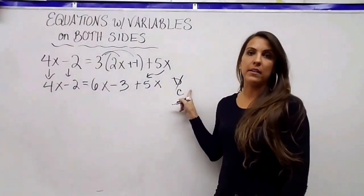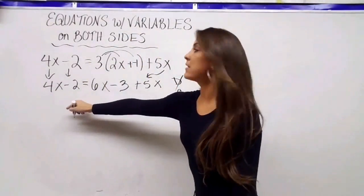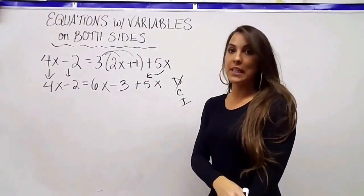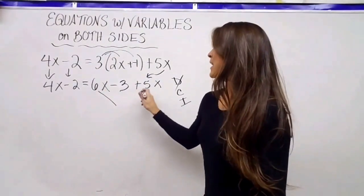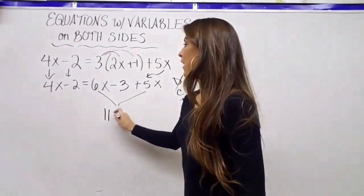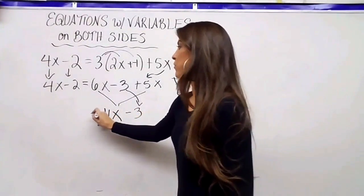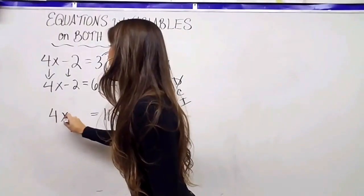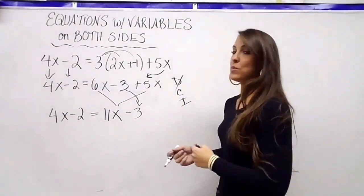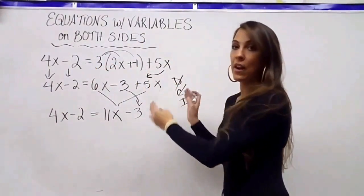The C stands for combine. I look to see if there's anything on each side I can combine. On the left, 4x and negative 2 are not like terms so I can't combine them. On the right, 6x and positive 5x are like terms, so I combine those to get 11x, and bring down the minus 3. I won't combine across sides — that requires inverse operations.